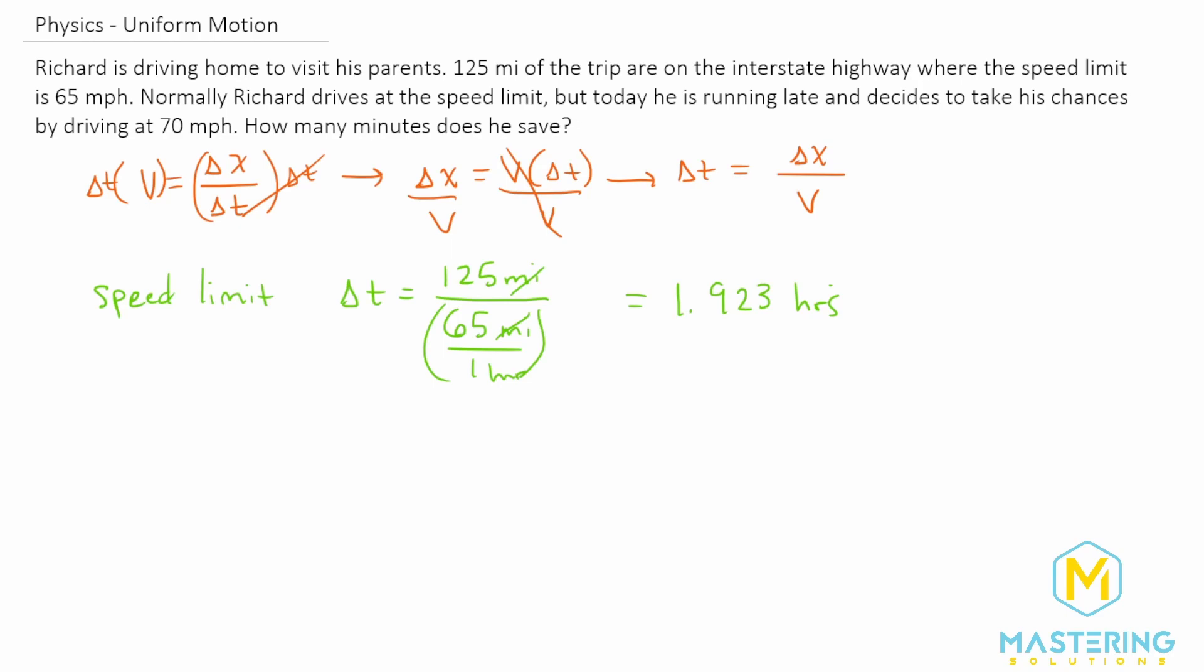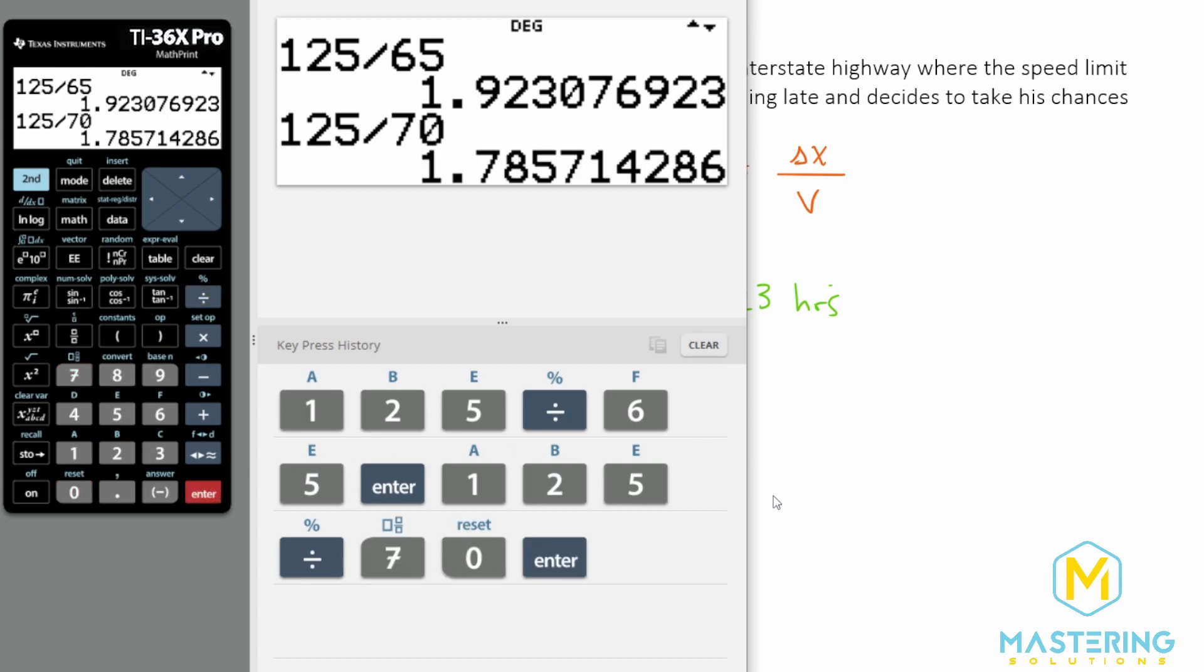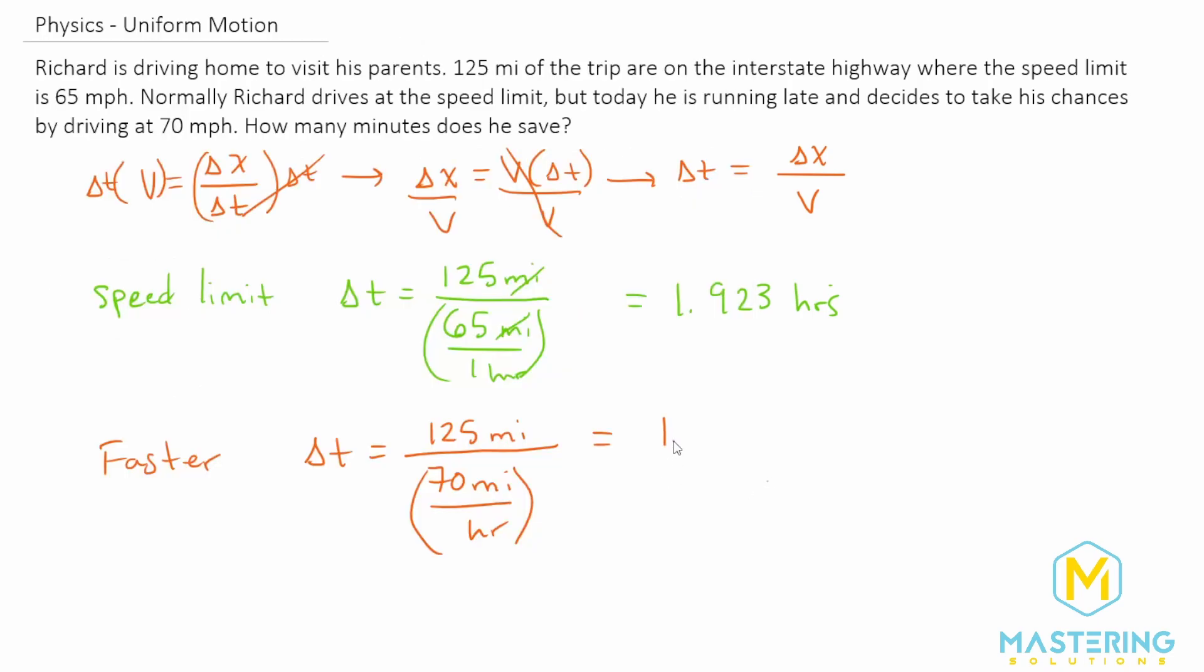Now we need to figure out how long it takes him when he's going faster. So that will be delta t is equal to the same distance. We didn't change that at all, divided by a faster speed of 70 miles per hour. That gives us 125 divided by 70, which is 1.786 hours.